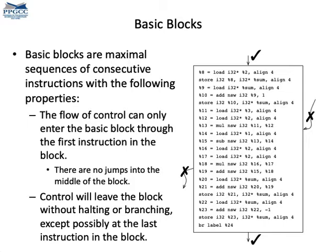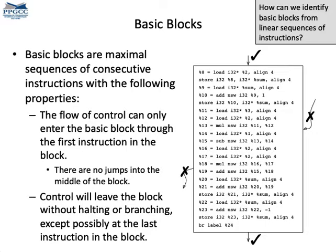So, what's a basic block? They are sequences of instructions that always execute consecutively. That means that basic blocks can only have branches at the end. Also, the program flow can only enter a basic block through the first instruction. If we observe the binary representation of a program, we will only see a long sequence of instructions. So, how can we split the sequence of instructions that form a program into basic blocks?